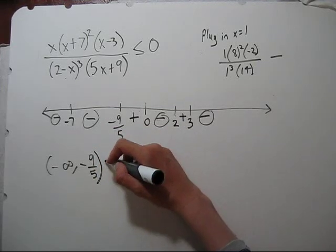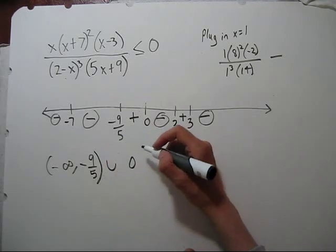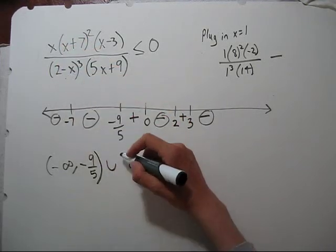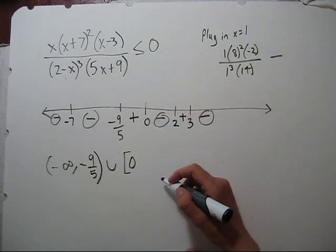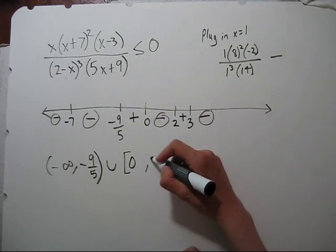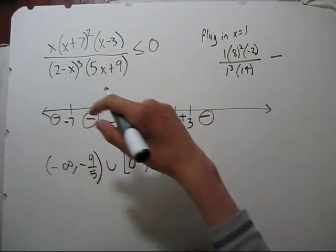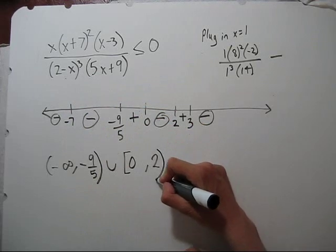Now we go to zero. Open or closed, it makes the numerator zero. More less than or equal to zero, so we can include that. We go up to two. Two makes our denominator zero, which would be undefined. We can't include that.